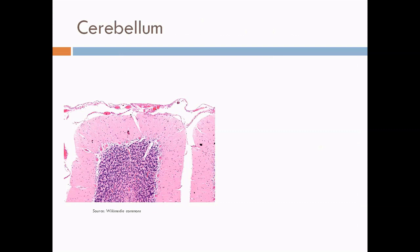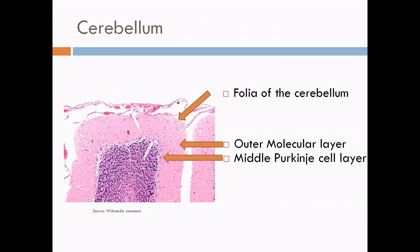This is a section through the foliar of the cerebellum. We can see that there is a layer of pia mater which covers the surface of the cerebellum. The outermost layer of the cerebellar cortex is the molecular layer. Internal to this is the intermediate or the middle Purkinje cell layer. This is followed by the innermost granular layer. Next to it is the white matter. The white matter contains the fibers which are efferent and afferent from and to the cerebellar cortex.